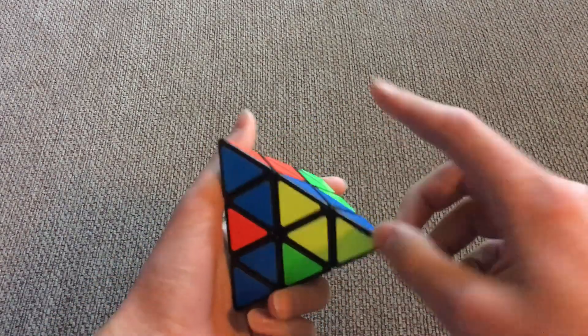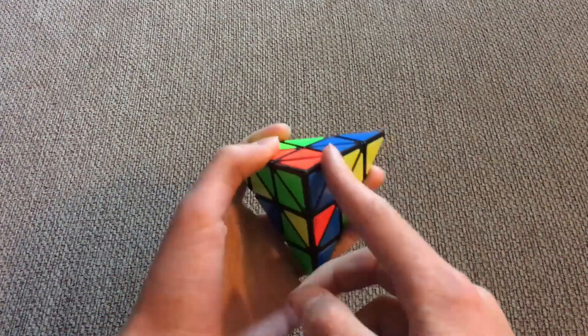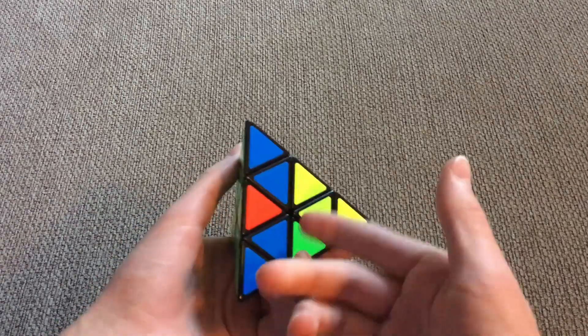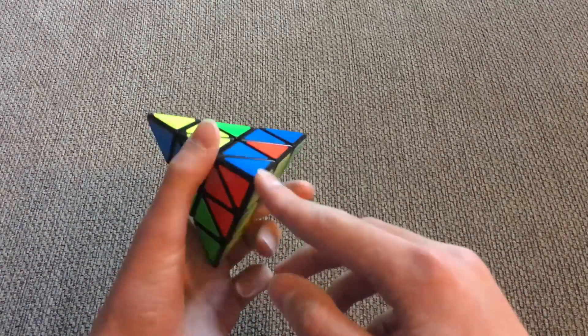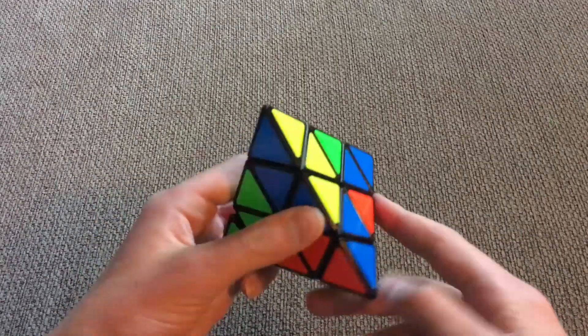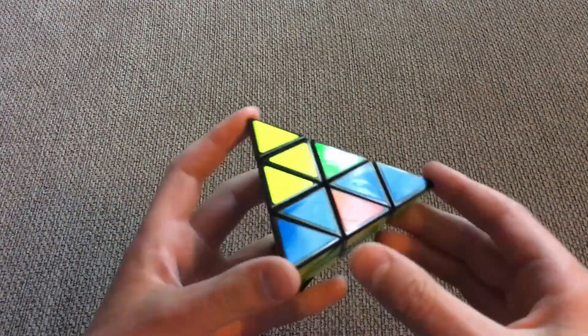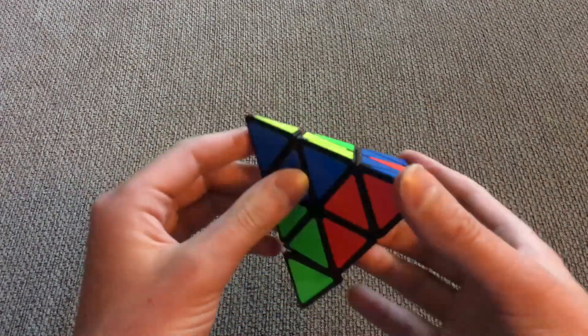Now, the next step you want to do is find each tip that has blue on it, or really any color, but I like to solve blue. So this one, this one, and this one. So you want to put your finger on all of these and remember them.